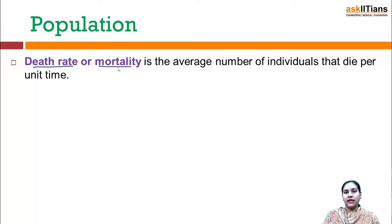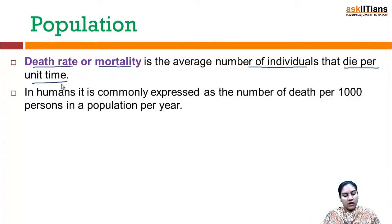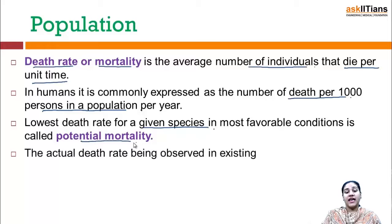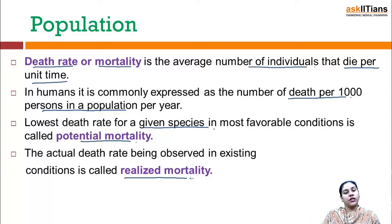The next population attribute is death rate or mortality. It is the average number of individuals that die per unit time. In humans it is commonly expressed as the number of deaths per thousand individuals in a population per year. The lowest death rate for a given species under most favorable conditions is known as potential mortality, but the actual death rate observed under existing conditions is called realized mortality. Realized mortality is always more than the potential mortality.